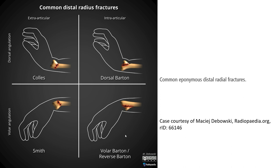In the image on the left upper quadrant, we call this the Colles' fracture. This is an extra-articular fracture of the distal radius with dorsal angulation.